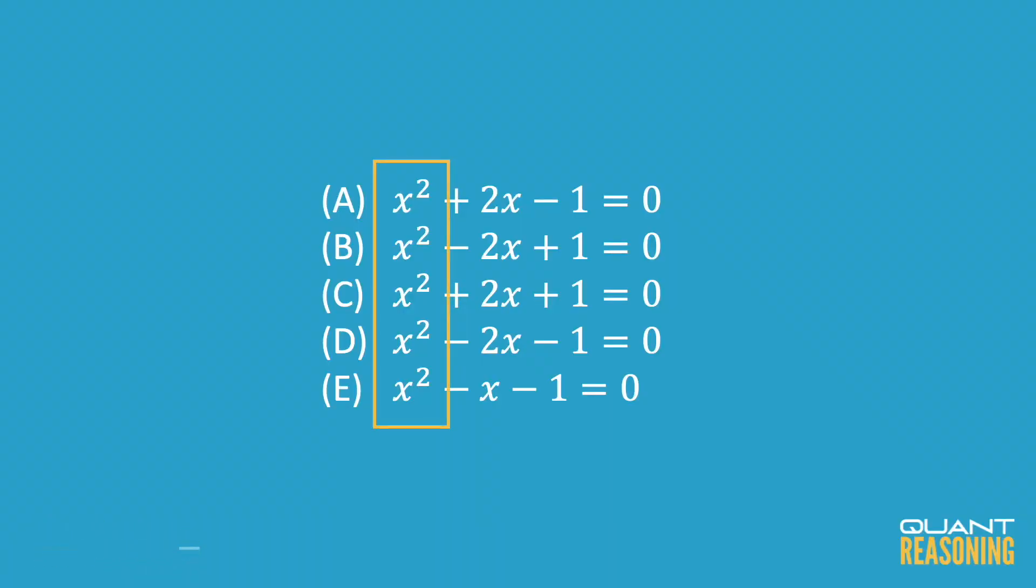So I'm thinking if 1 plus root 2 is the solution to one of those equations in the answer choices, I might as well just go ahead and square it just to see what would go into the position of x squared in each of the answer choices.